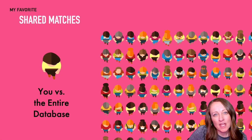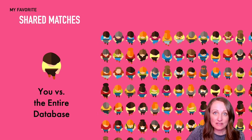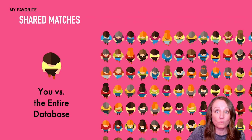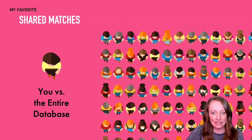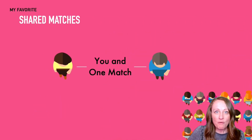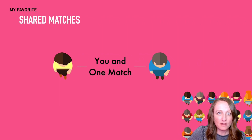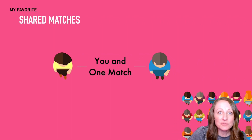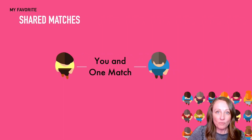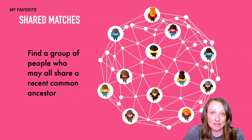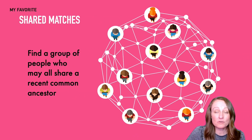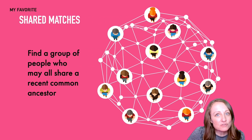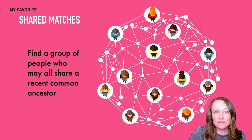What the shared matches tool does is filter your DNA matches. When you're looking at shared matches, you're asking the database to filter your matches according to one person — instead of you versus the entire database, you're asking: show me the people that match me and this one other DNA match. The algorithm finds all the people in your list that are also in the list of that particular match, creating what we call a genetic network.